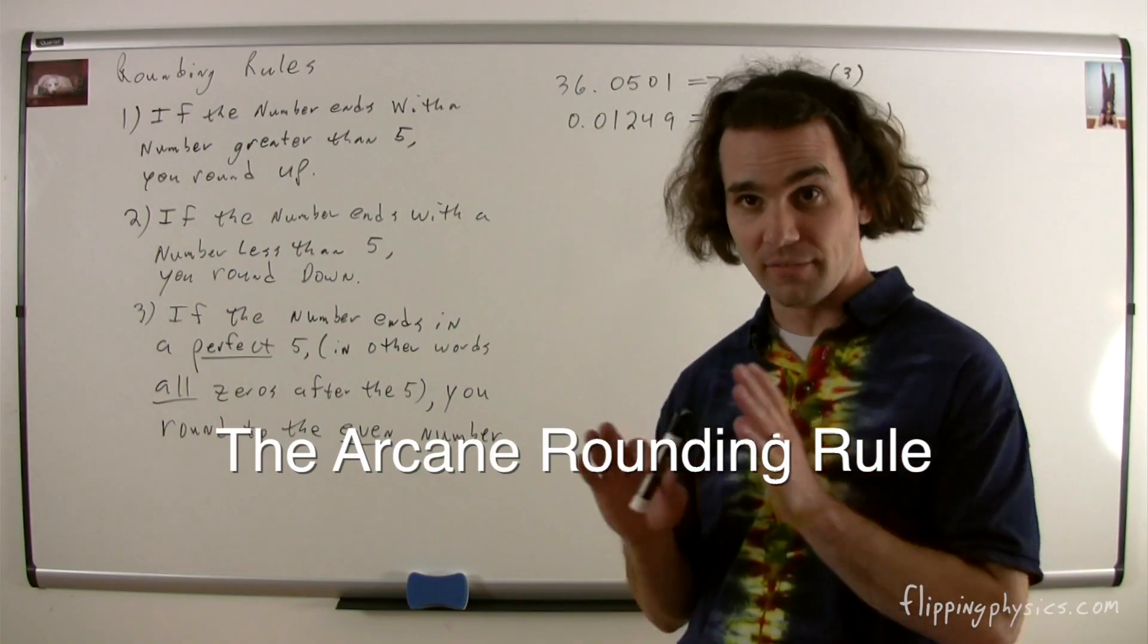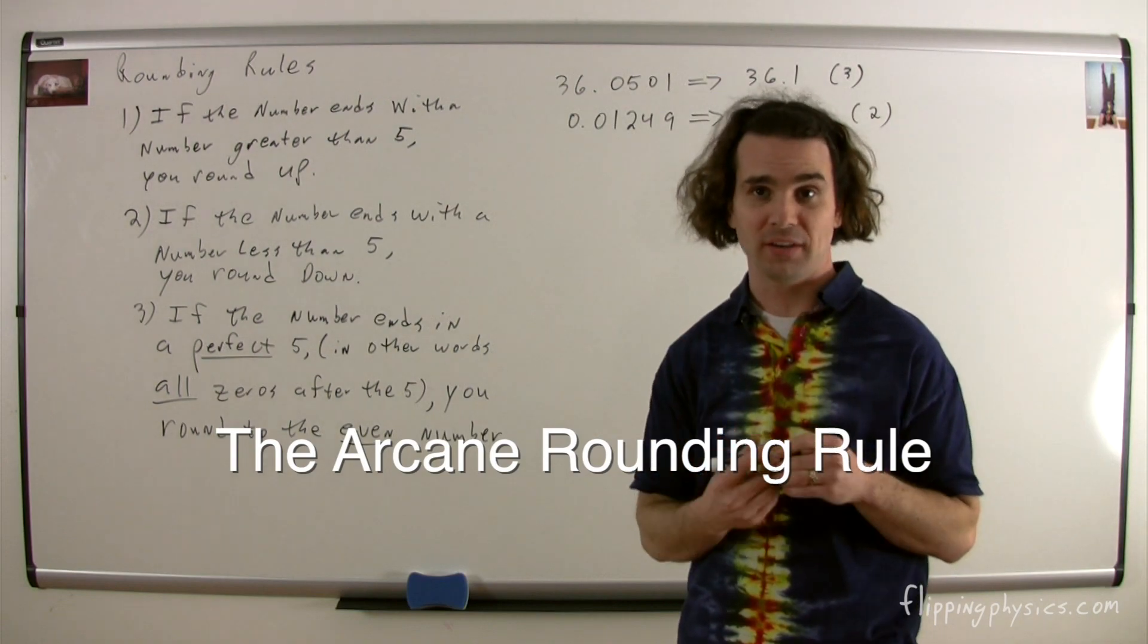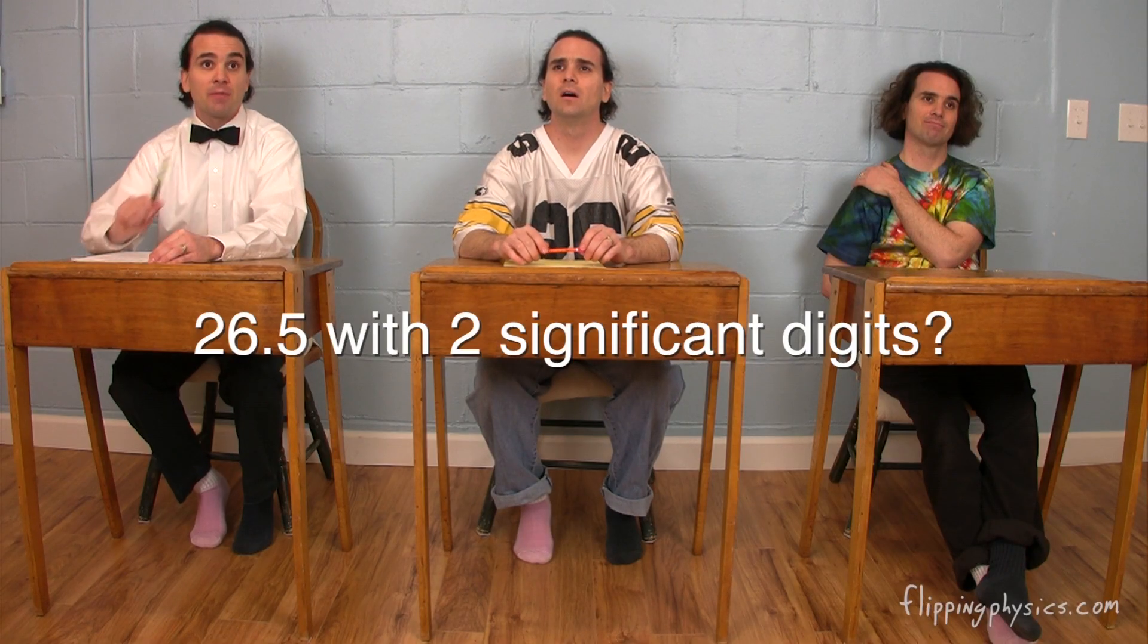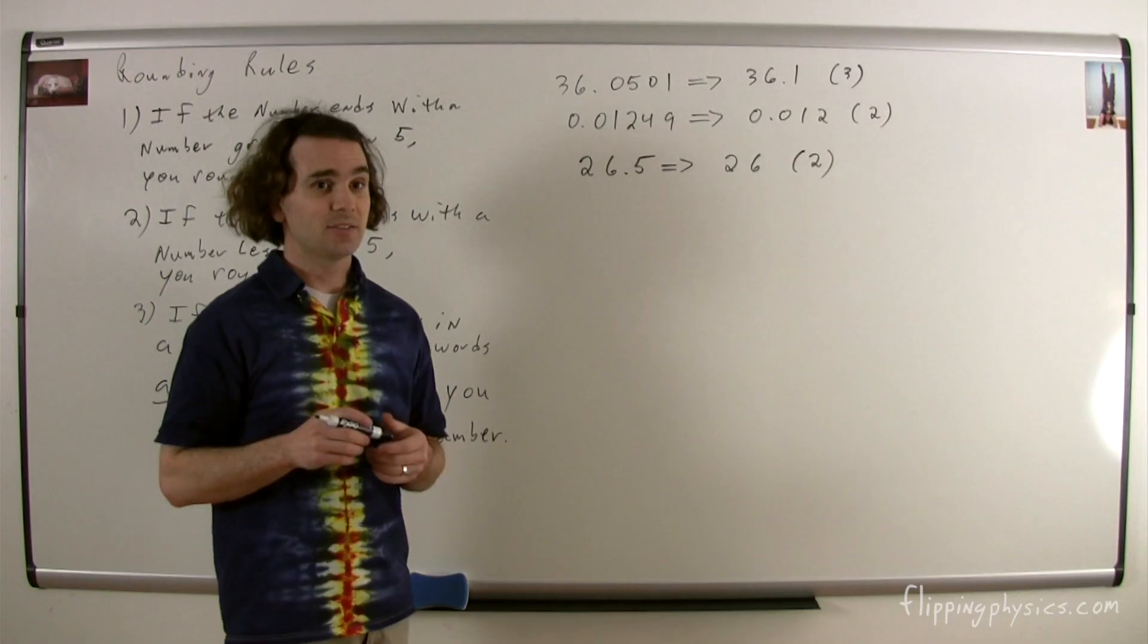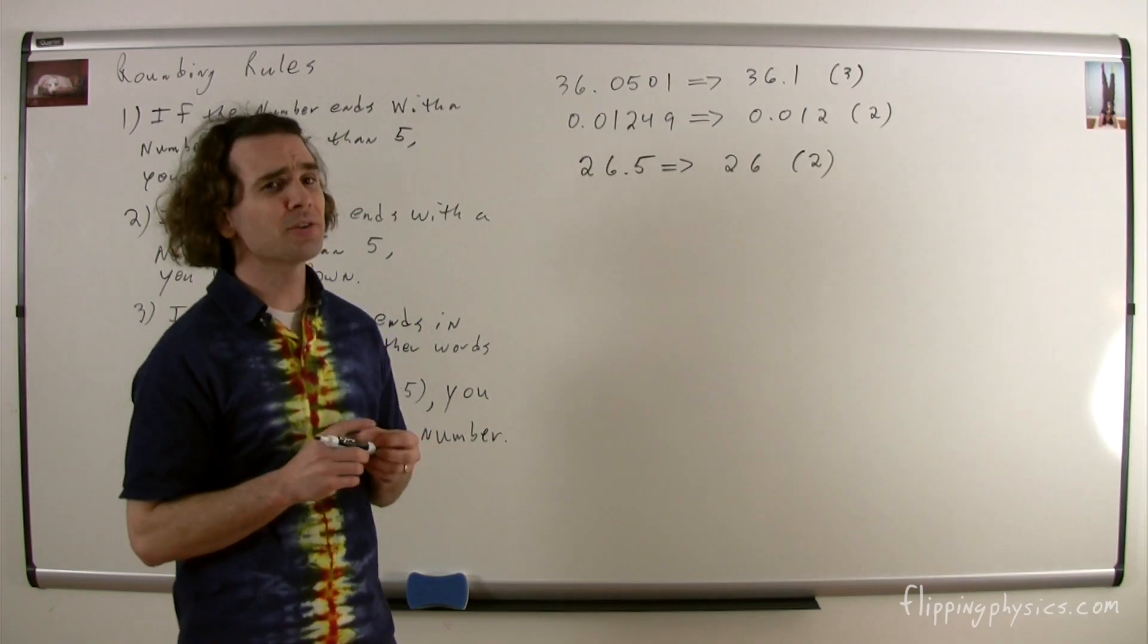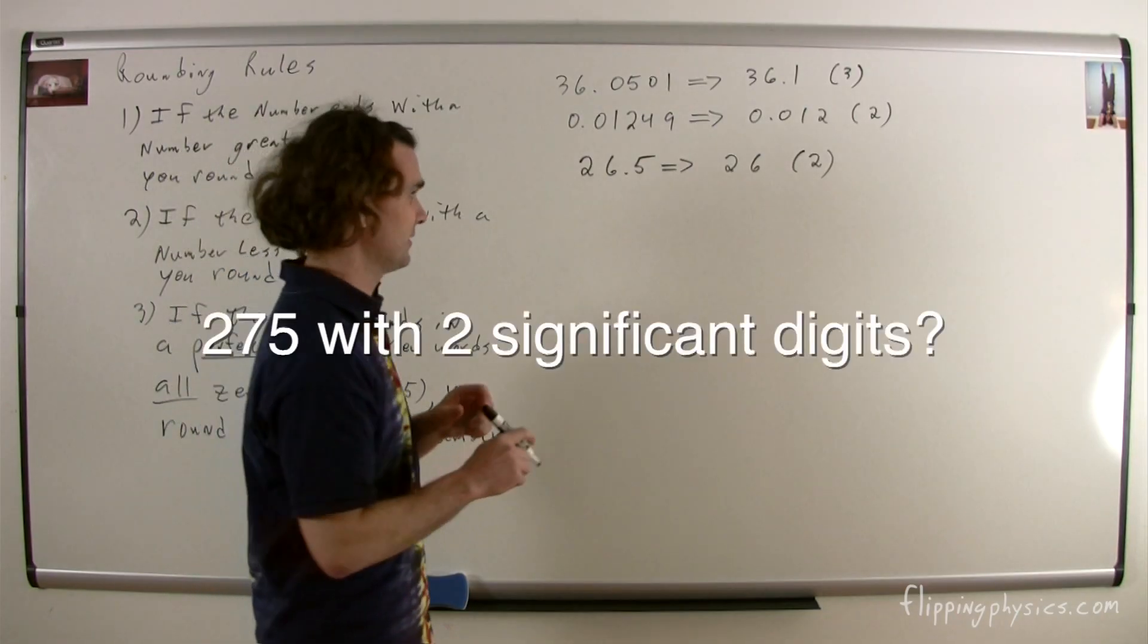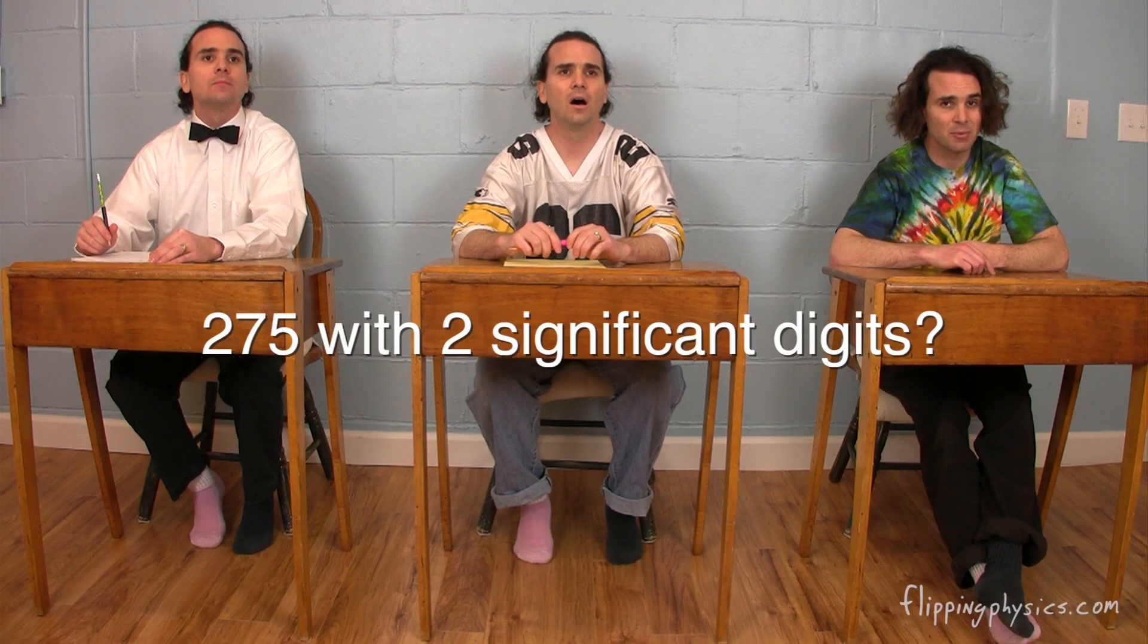I like to call this the arcane rounding rule because it is a rule that is truly understood by few. So, let's give it a try. Billy, how would you round the number 26.5 to two significant figures? Well, it ends in a perfect 5, so we round to the even number or 26. Yes, 26 has two significant figures. And, Bo, please round 275 to two significant figures. That would be 280. We round to the even number, it ends in a perfect 5.